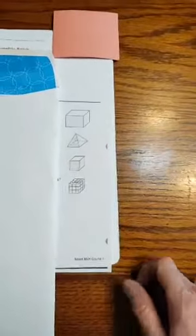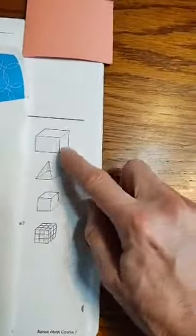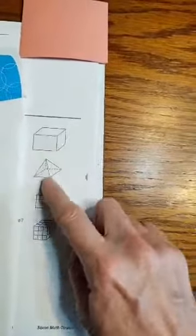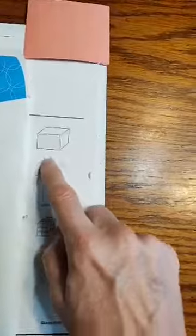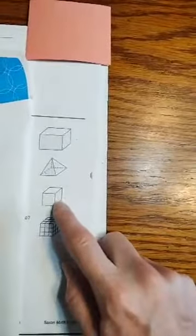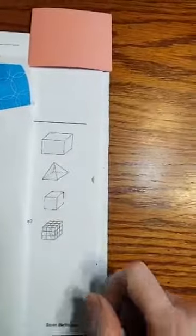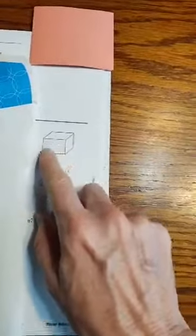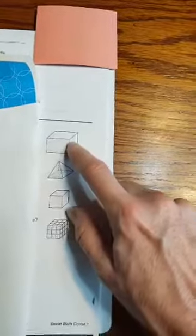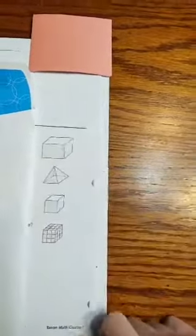All right, so remember these three solids that we talked about today, we have rectangular prism because it has a rectangular side. A pyramid has triangles, and a cube has squares on each face. And our characteristics were faces, the flats, edges, the lengths of the bends, and vertexes or vertices, which are the corners.